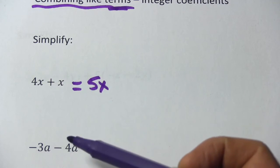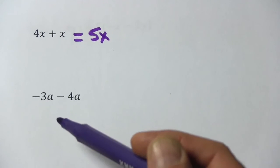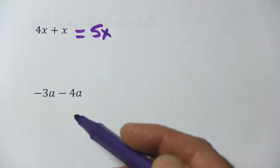So we're adding the coefficients of the like terms. Let's take a look at this one, negative 3a minus 4a.